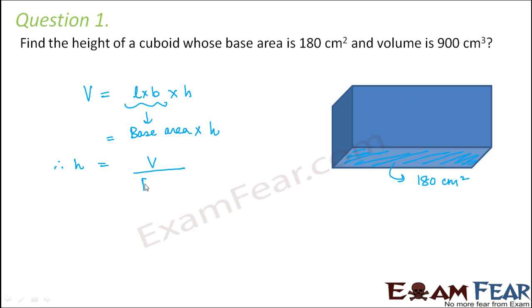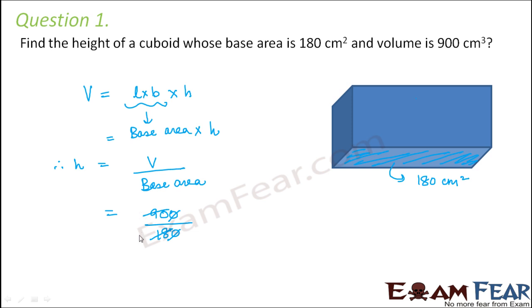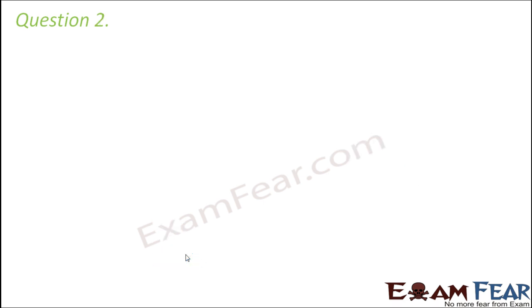Therefore, height = volume ÷ base area. So this is 900 cm³ divided by 180 cm², which gives 5 cm. So 5 cm is the height of the cuboid.